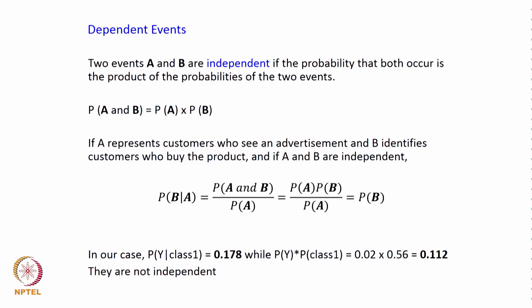Two events A and B are independent if P(A and B) = P(A)·P(B). For example, if A represents customers who see an advertisement and B identifies customers who buy the product, P(B|A) = P(A and B)/P(A), but if independent, P(B|A) = P(B). In our case, P(joining | class 1) = 0.0178, while P(joining)·P(class 1) = 0.02×0.56 = 0.0112. Since these differ, joining and class 1 are not independent — there is a dependency.